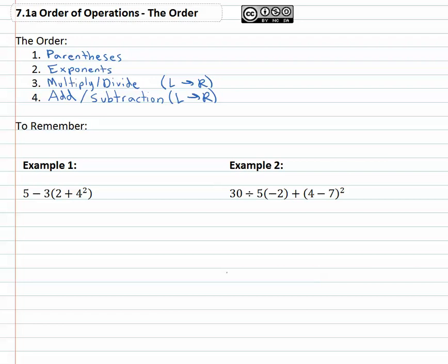Parentheses always come first, then exponents, then multiplying and dividing left to right, and then adding and subtracting left to right. Some people help themselves remember this by coming up with some type of mnemonic like please excuse my dear Aunt Sally which gives us the first letter of each, or people just take the first letters to come up with this word PEMDAS, which I always write vertically to remind me that multiplying and dividing is done left to right and adding and subtracting is done left to right.